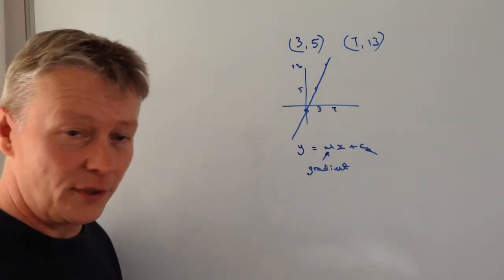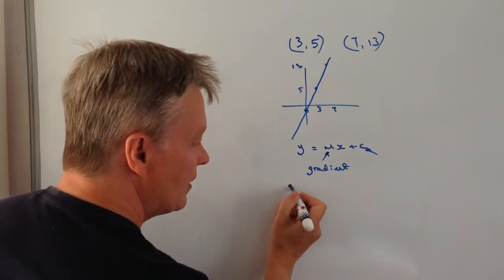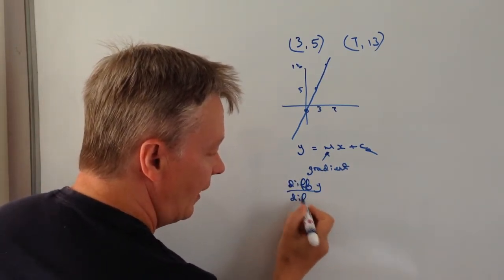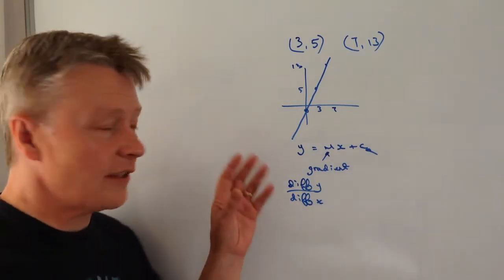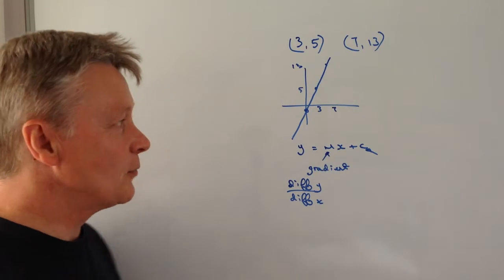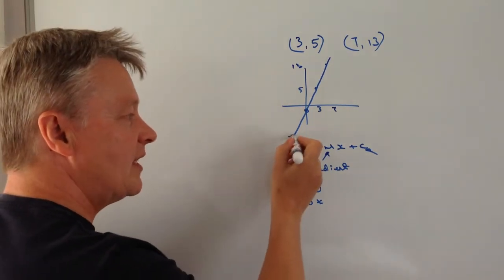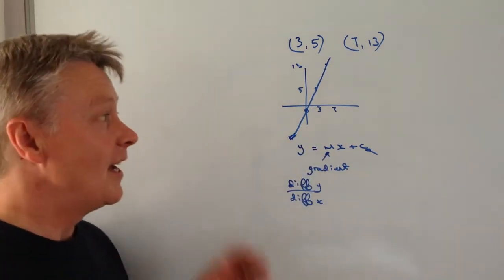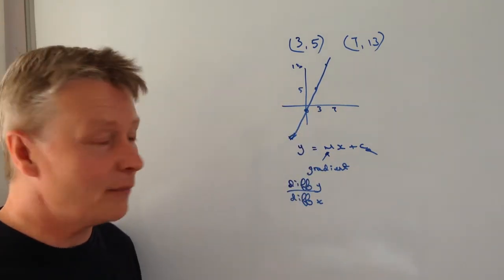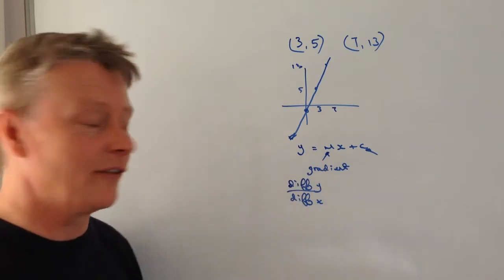So let's look at the gradient first. Well the easiest way of dealing with the gradient is difference in y divided by difference in x. Now one of the reasons I think it's a good idea to actually sketch the graph is it'll give you a very clear idea as to whether it's a positive gradient, which it is in this case. It's shaped a bit like a tic, it is a positive gradient, and there will be some questions where it's a negative gradient, but it's much better to get an idea first.